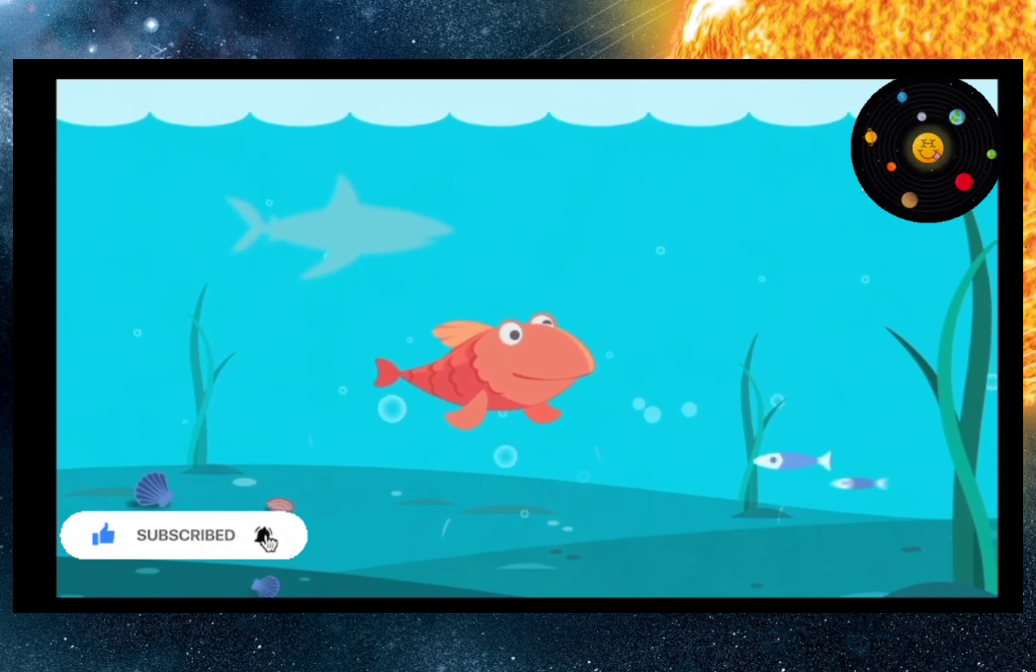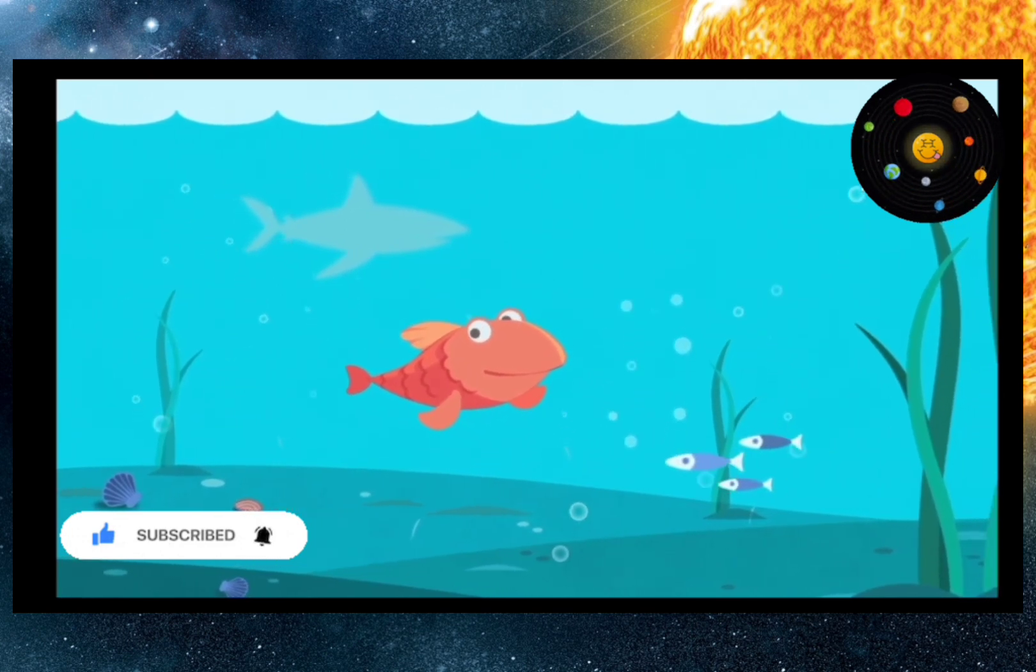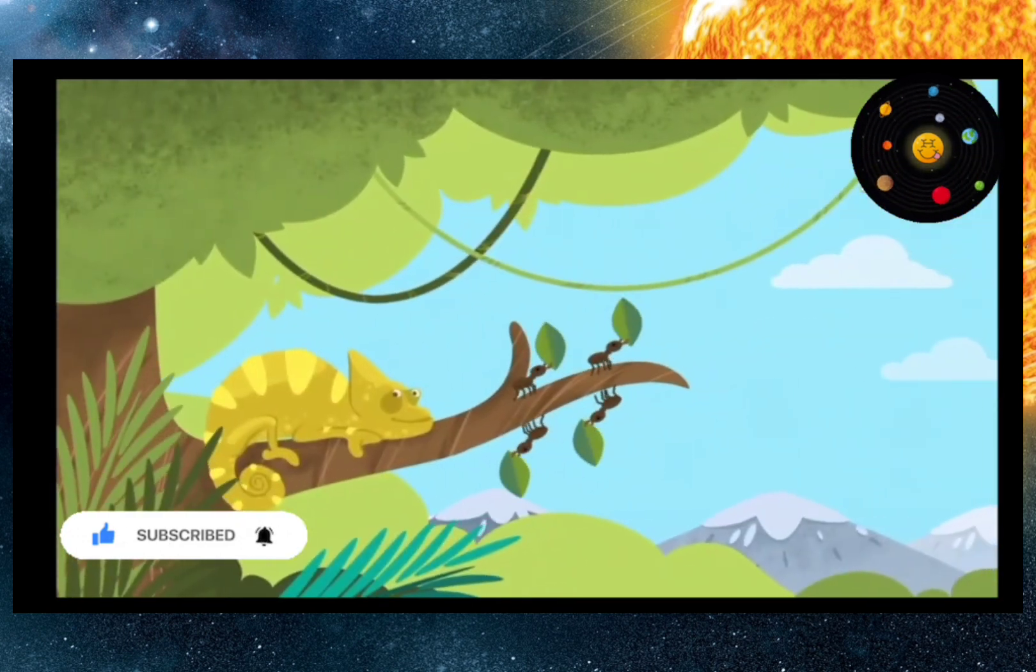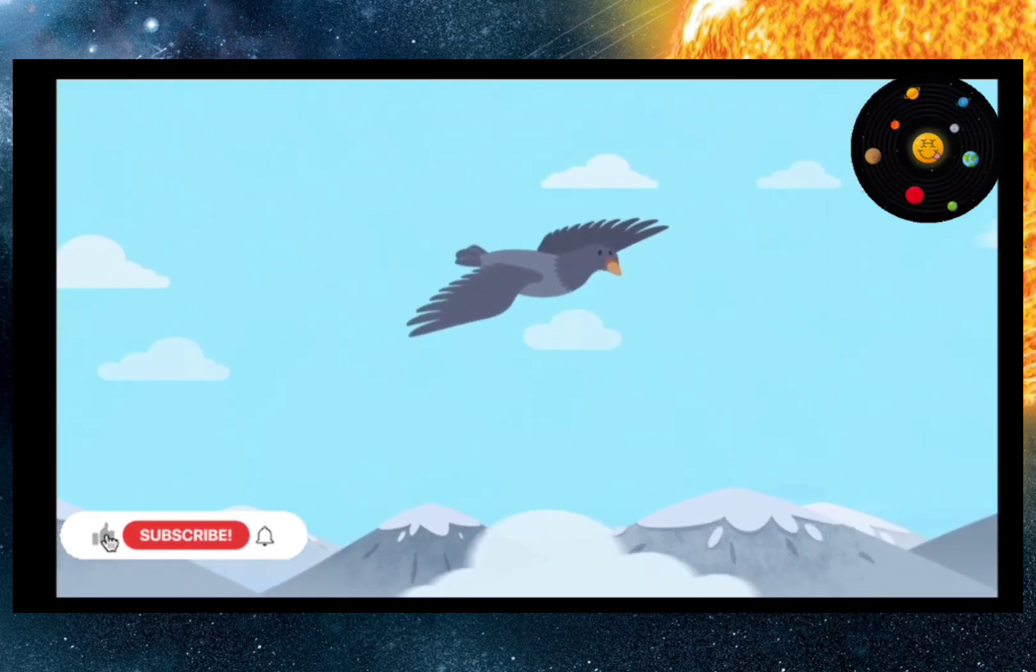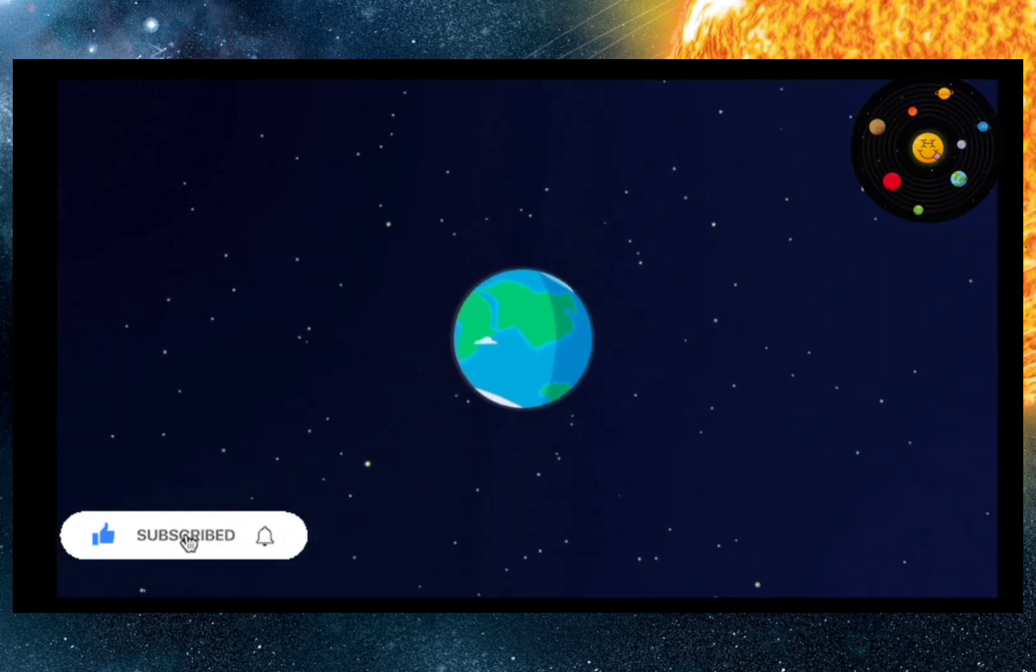The Earth is inhabited by millions of species. Underwater, on the ground, and in the air, and they are all connected with each other. Our home is a fragile organism, and we should treat it very carefully.